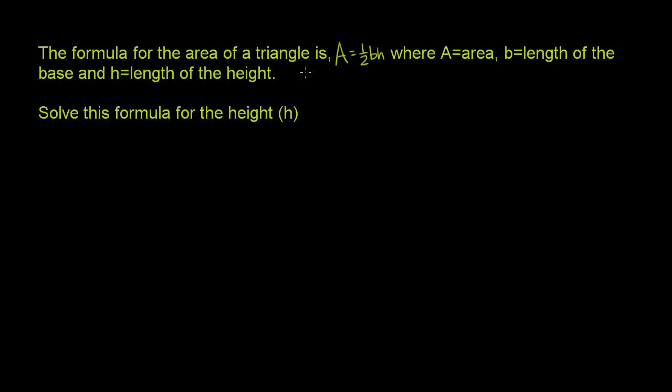The formula for the area of a triangle is A = 1/2 bh, where A is area, b is length of the base, and h is length of the height. So area equals 1/2 times the length of the base times the length of the height.